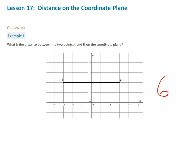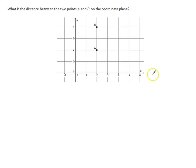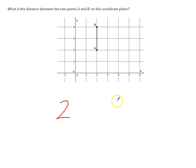Let's move on to the next one. What is the distance between the two points A and B on the coordinate plane? In this case, we have a vertical line. What we can do here is just go ahead and count from A to B. So we'll go up 1, 2. So we know in this case, it's going to be 2 units.